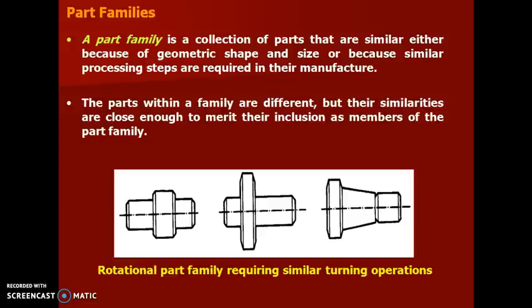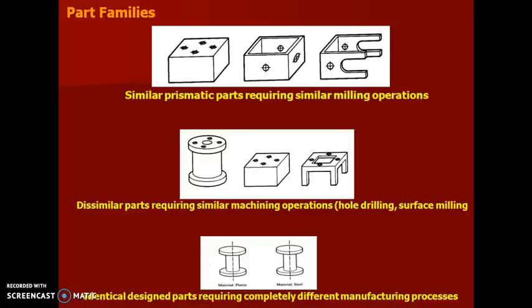Coming to part family, it is a collection of parts that are similar either because of geometric shape and size, or because of similar processing steps required in their manufacture. The parts within the family are different, but their similarities are close enough to merit their inclusion as members of a part family. You can look at the picture which shows rotational parts requiring similar turning operations. Similarly, these are some part families having either similar design attributes or manufacturing attributes.